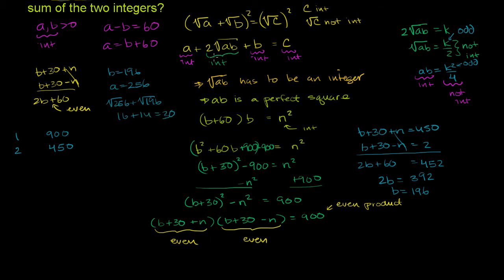Let's check: √256 + √196 = 16 + 14 = 30. This looks like it might work, but remember — the square root of c cannot be an integer. Here the value is 30, which is an integer, so c would be 900, which is a perfect square. But the problem says c is not a perfect square, so this solution does not work. We have to cross these out, even though it was a very tantalizing solution with clean numbers.